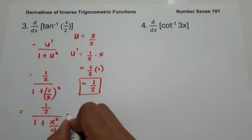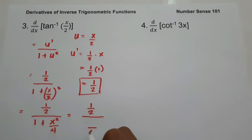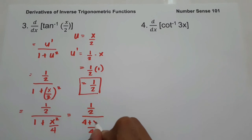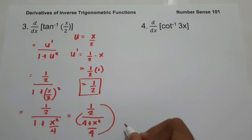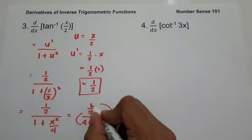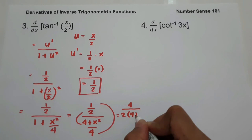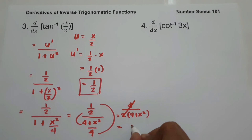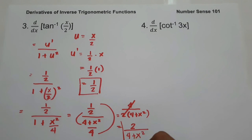So let us simplify. We have one-half and then let us use 4 as the denominator: 4 multiplied by 1 is 4, plus x squared. Then let us multiply to simplify our answer. This gives us 1 times 4, that is 4, and 2 multiplied by 4 plus x squared. We can cancel, so 4 becomes 2 and 2 becomes 1, giving us 2 over 4 plus x squared. And this will be our answer.